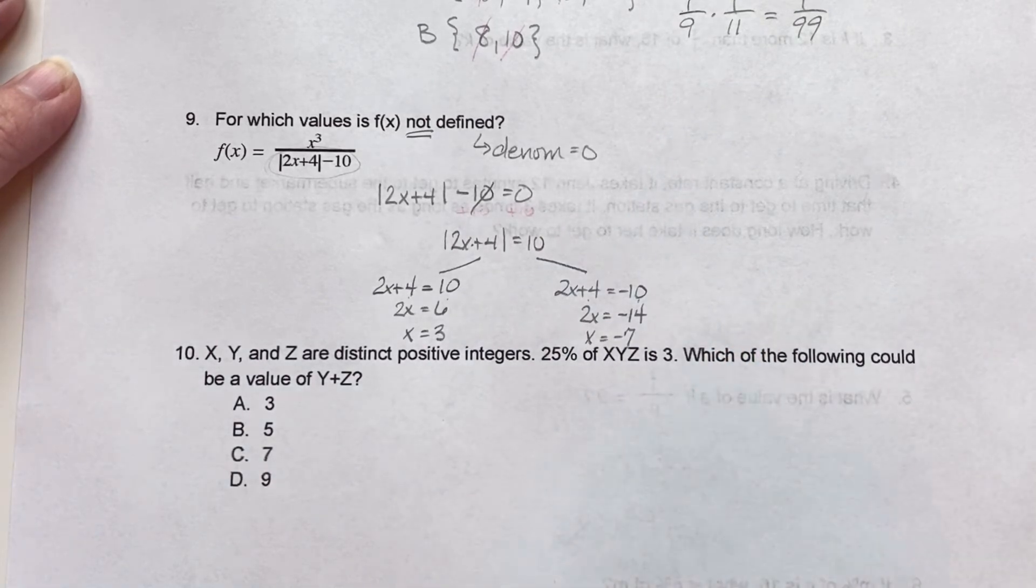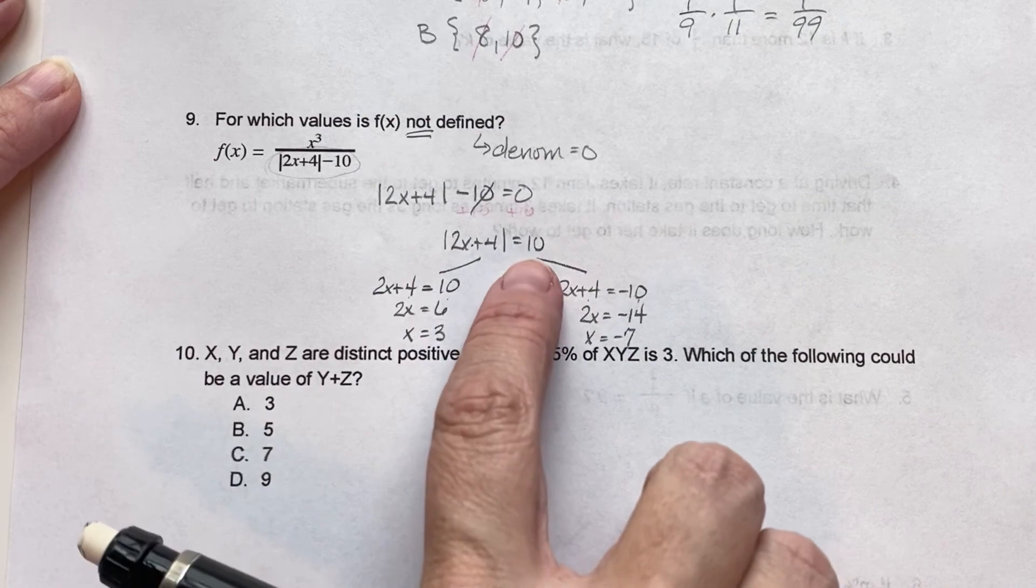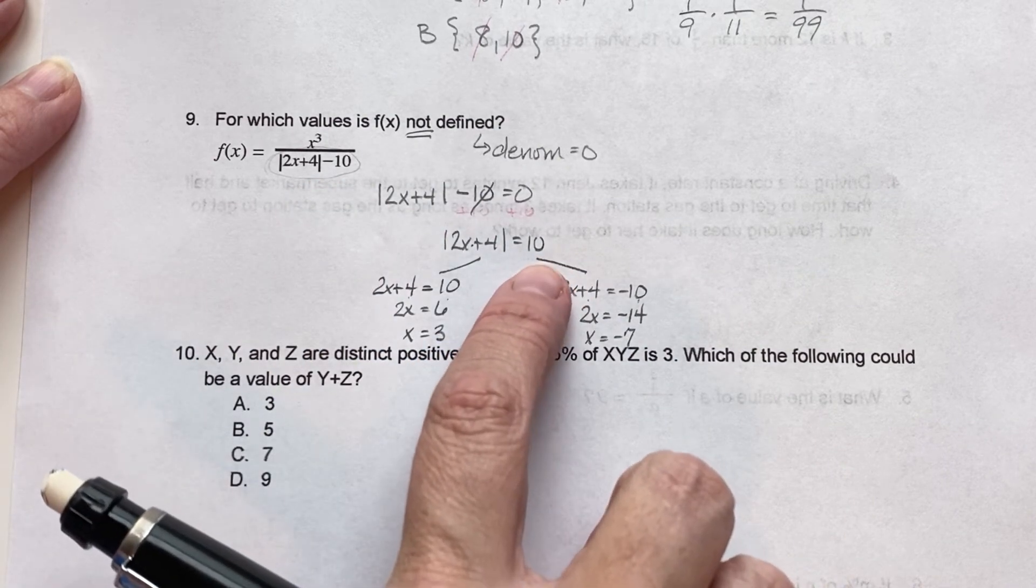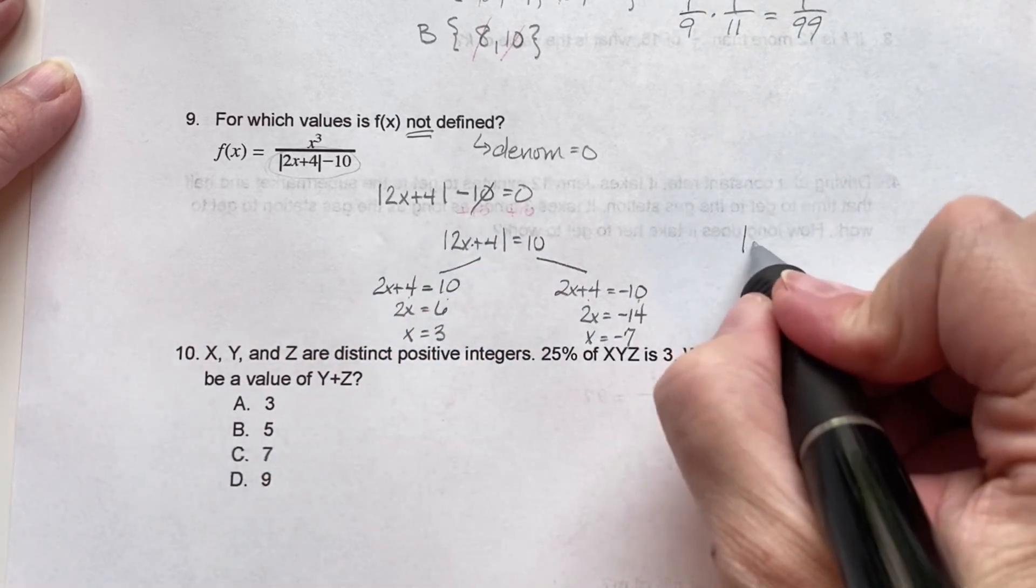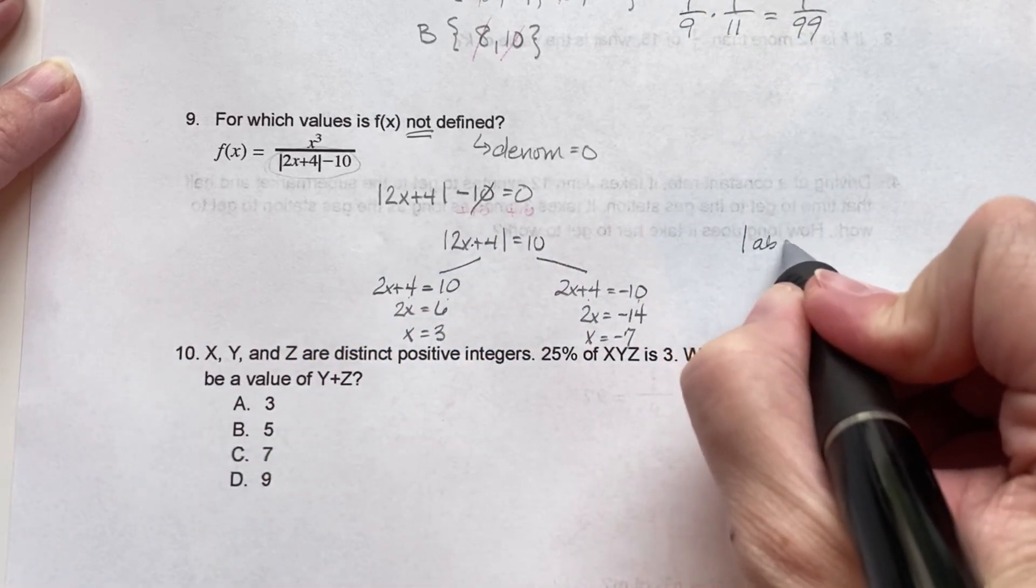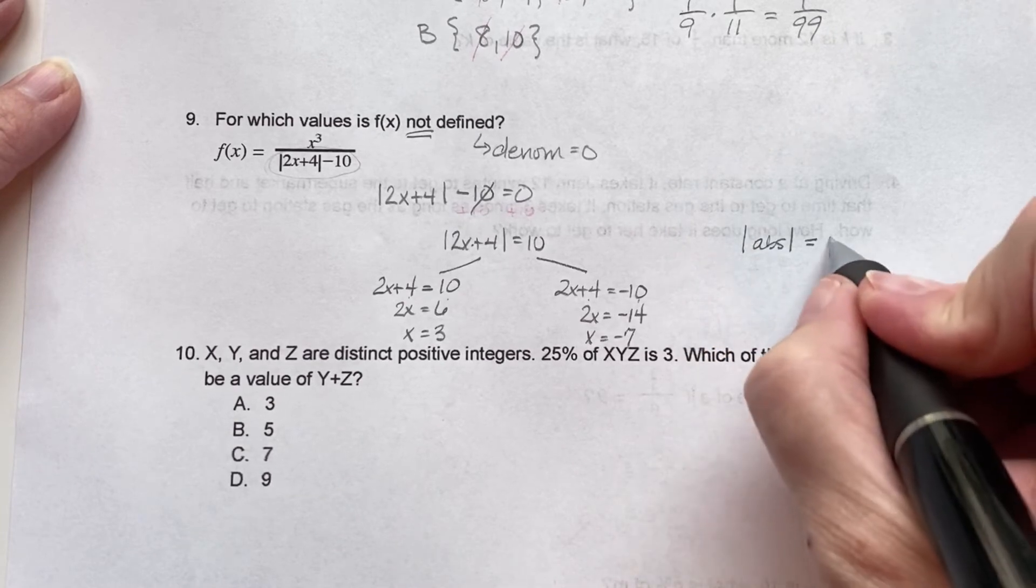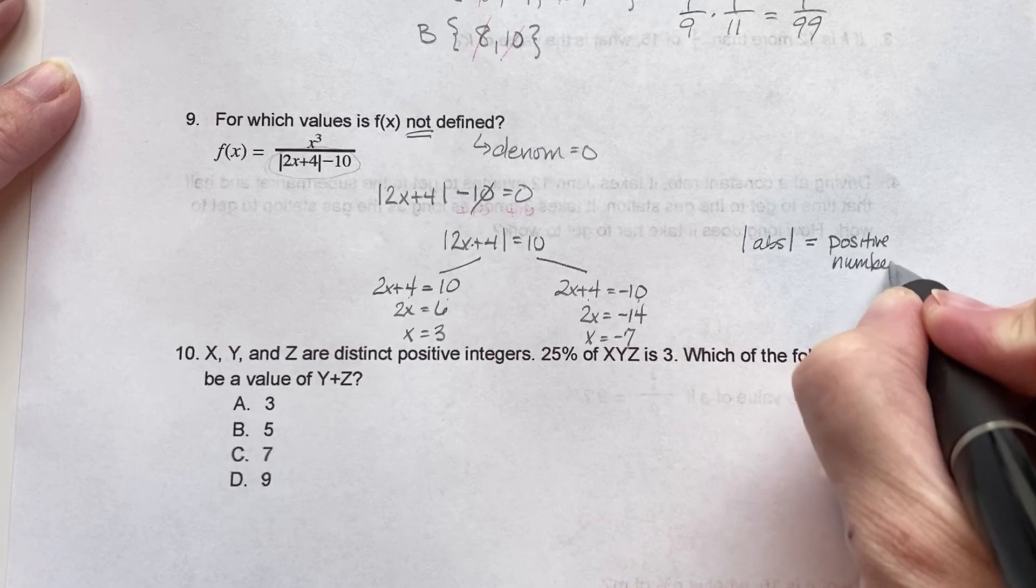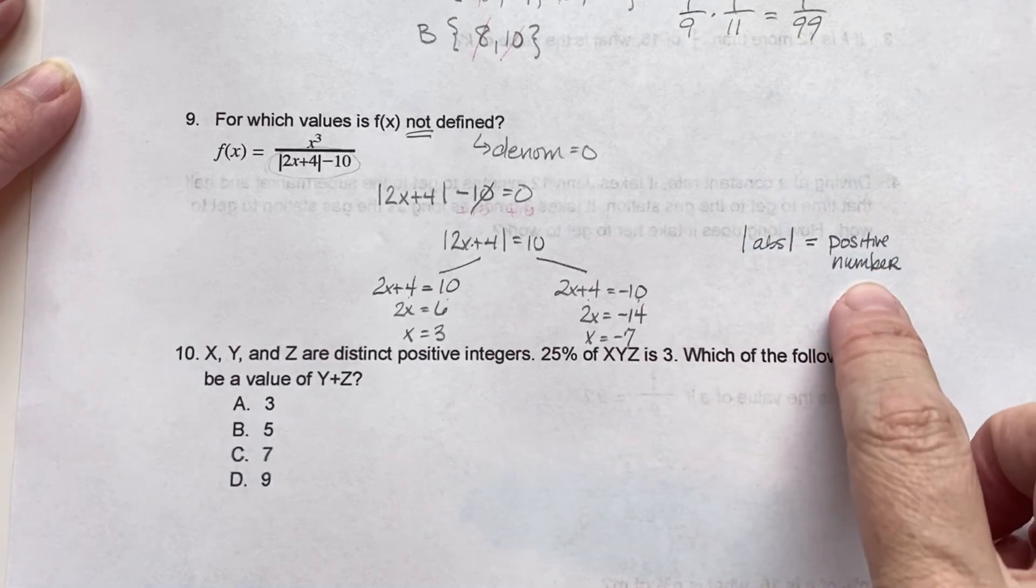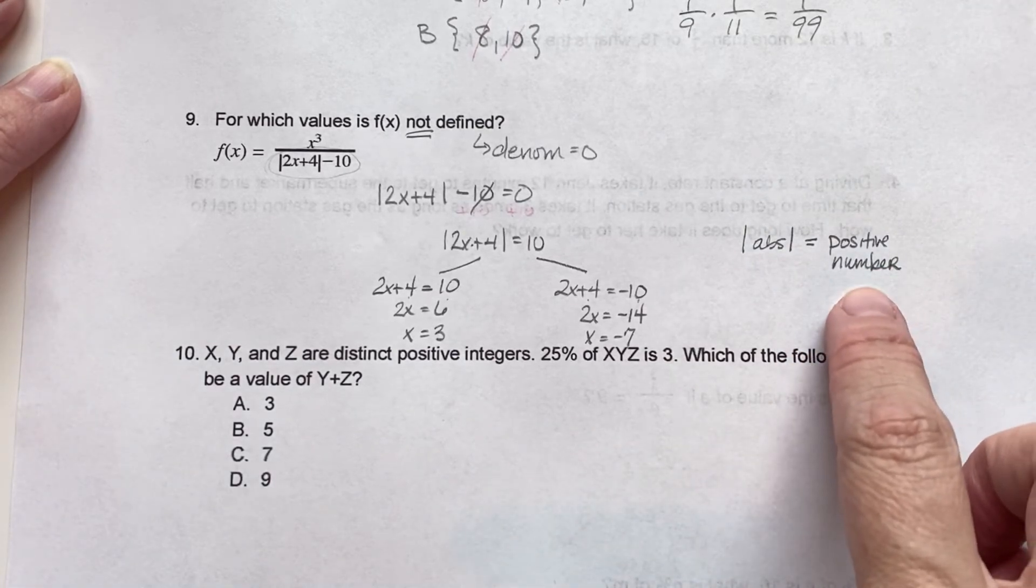Now if this had ended up being a negative number on the equal side, that cannot happen. So your absolute value must always equal a positive number. If it's a negative number over here, it's not possible. Alright.